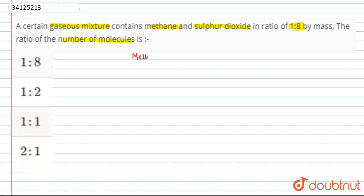Methane ratio to sulfur dioxide. Let's write it in chemical form. Methane is CH4 and sulfur dioxide is SO2. We have the mass ratio, which is 1 is to 8. That is, if CH4 is 1, then SO2 is 8.